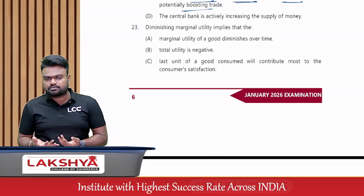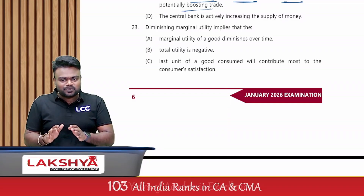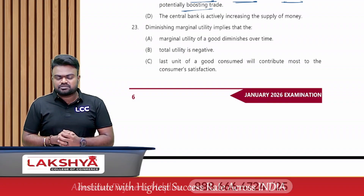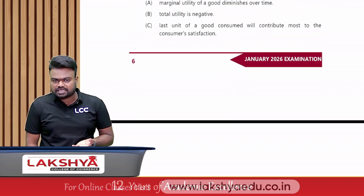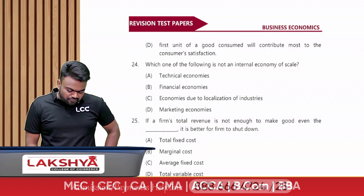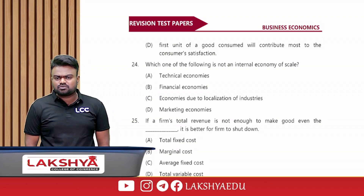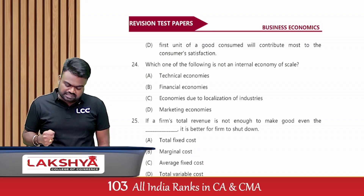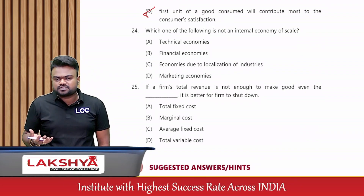Diminishing marginal utility: option A says marginal utility diminishes over time — that is wrong; it diminishes when we consume the same good repeatedly at the same time, not over a time period. Option B says total utility is negative — TU cannot become negative in any given case. Option C says the last unit consumed contributes more to satisfaction — that is wrong, it contributes less. Option D says the first unit consumed contributes most to consumer satisfaction — that is correct. Answer is option D.